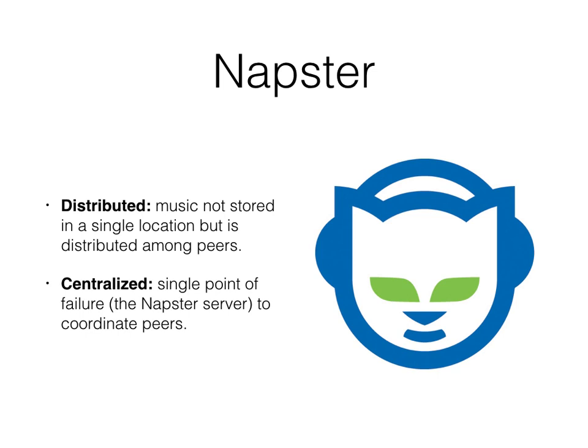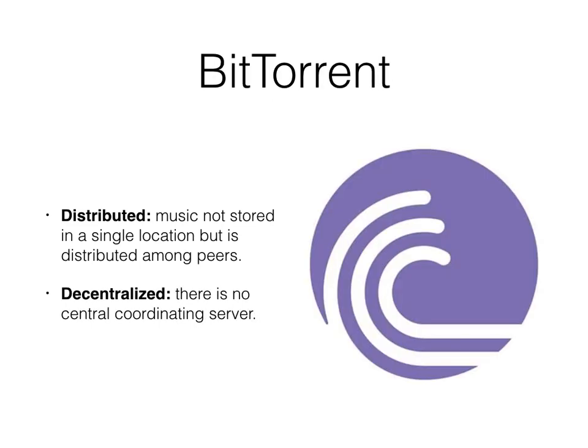If we look at some concrete examples, Napster was a system that was distributed because it distributed music across many different peers. However, it was centralized because those peers had to connect to a single point of failure — the Napster server — to coordinate the peers. Later on, BitTorrent came along to address that problem and decentralized the system by eliminating a single coordinating server.